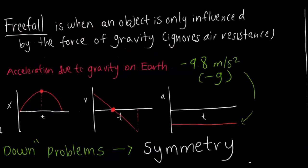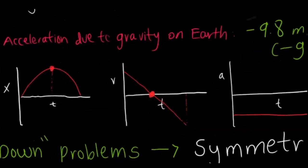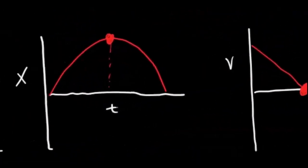Now we want to look at freefall. This is when you just throw an object into the air, and then you want to analyze its motion, or let's say you dropped a ball from a cliff. This is where the only force acting upon that object is the force of gravity, and we're ignoring air resistance. Acceleration due to gravity on planet Earth is negative 9.8 meters per second squared. It really is 9.8 meters per second squared, but because it's acting downwards, it's negative little g.